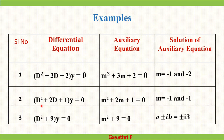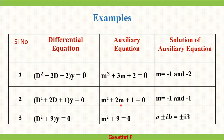Second example: (D² + 2D + 1)y = 0. Its auxiliary equation is m² + 2m + 1 = 0, which factors as (m + 1)² = 0. Its roots are m = -1 and m = -1. Both roots are real and equal, so this linear differential equation with constant coefficients has real and equal roots.